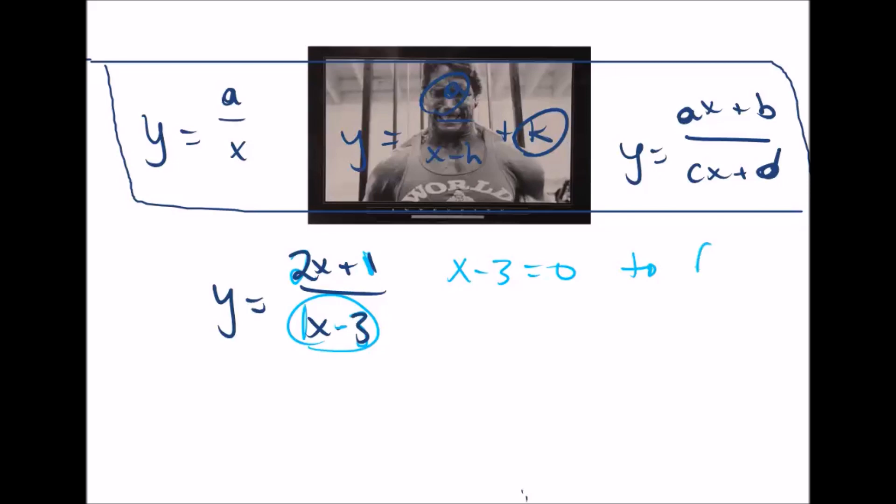So I'm going to write, and the reason this is a vertical asymptote is if you solve this, and after we solve it, you'll see that x equals 3.